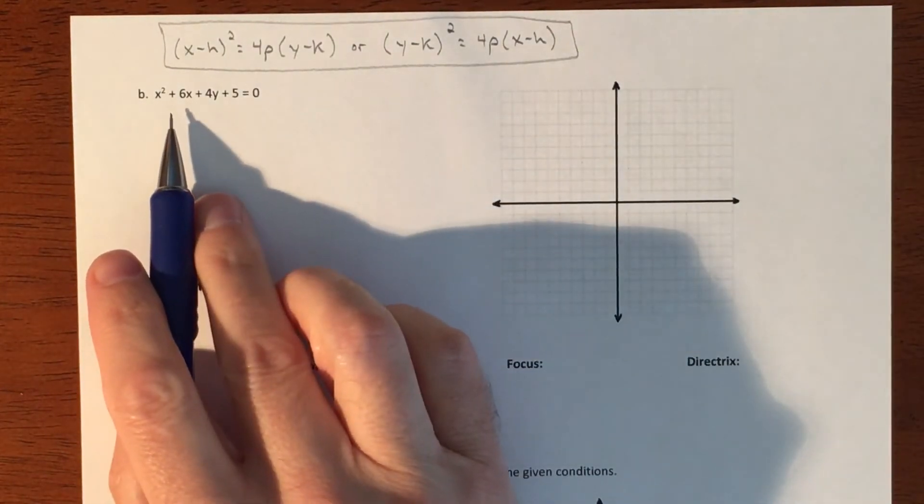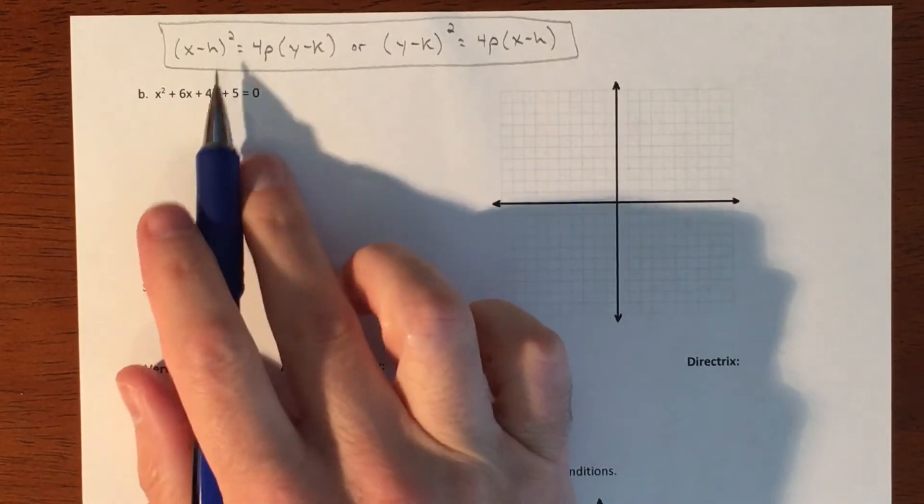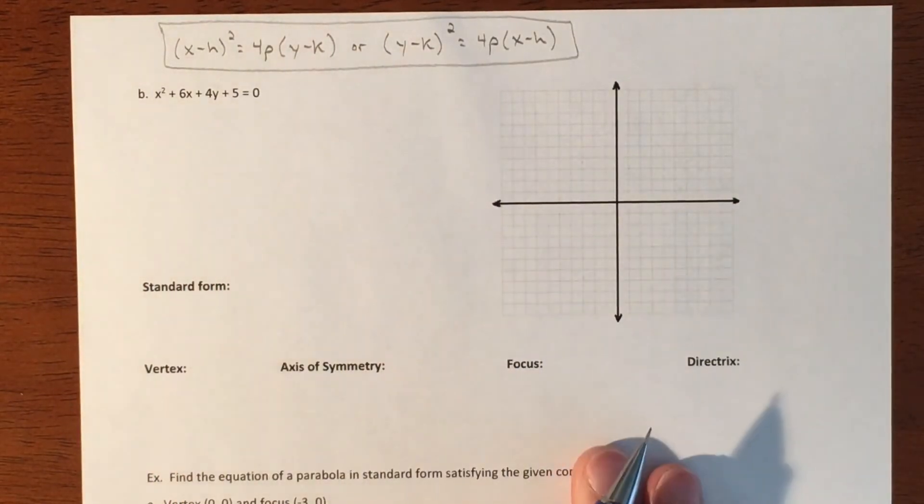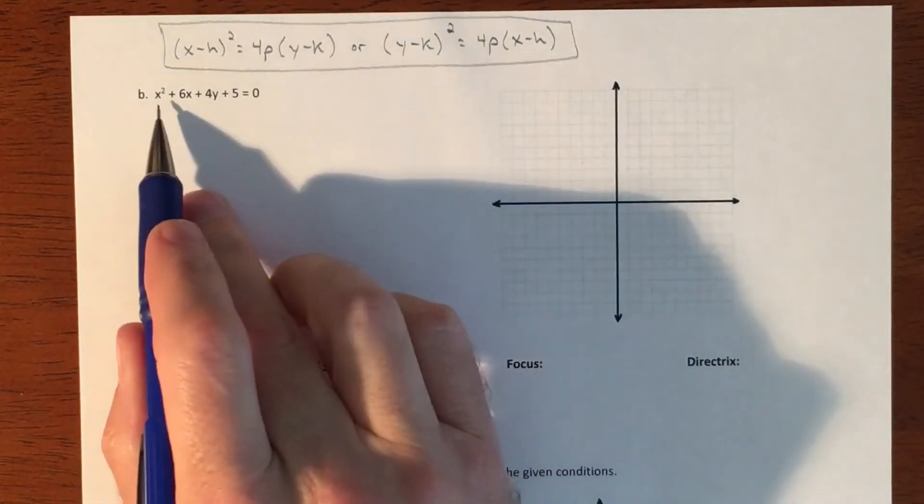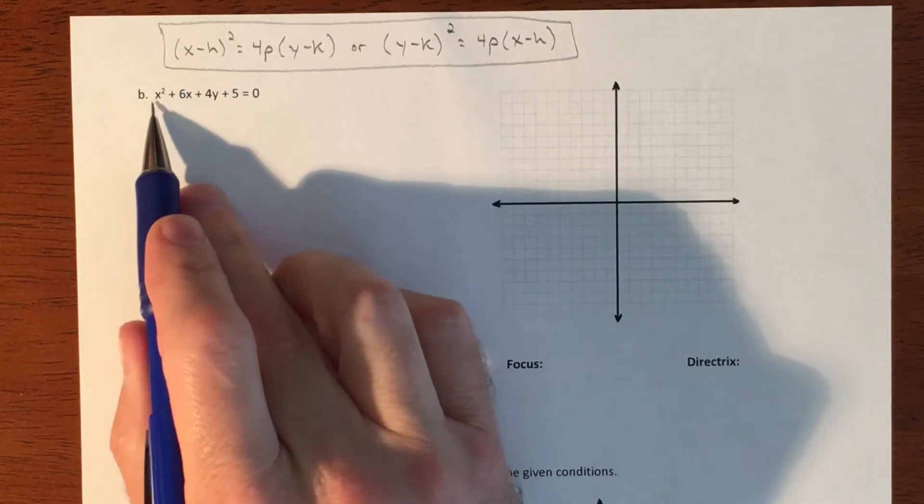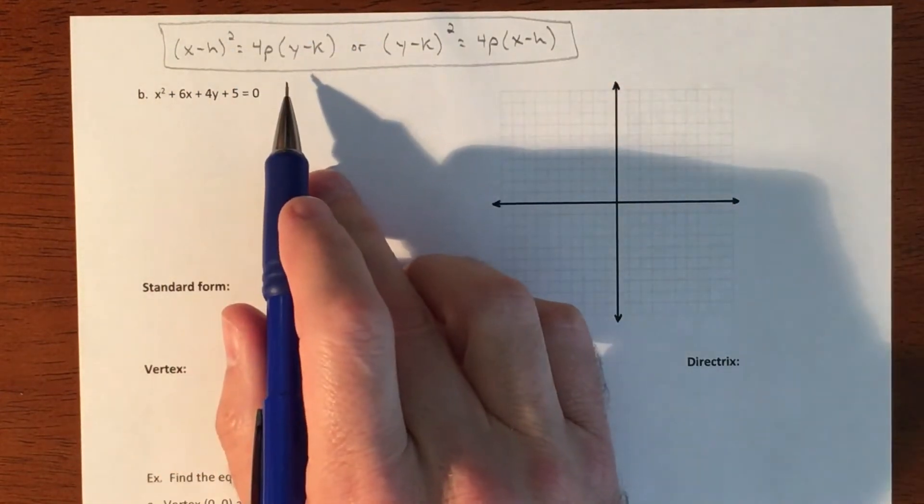So the problem with this one is this is not in our standard form. So we're going to have to manipulate this to get it into the standard form in order to graph it. So the first question is, should we make it look like this or should we make it look like this? All dependent upon which variable is being squared. So since the x is being squared, we're going to want to make it look like this. So we got to do a little bit of manipulation.